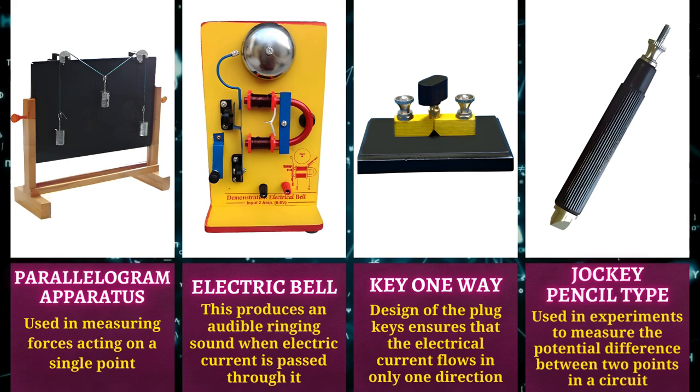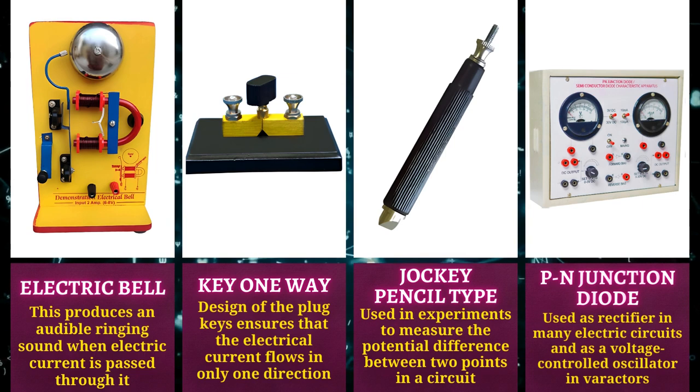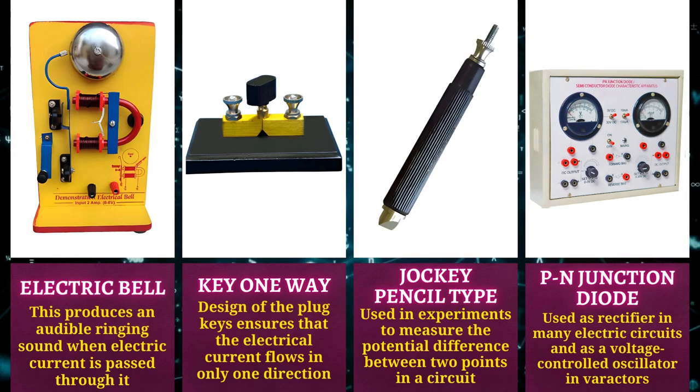Jockey pencil type is used in experiments to measure the potential difference between two points in a circuit. PN junction diode is used as rectifier in many electric circuits and as a voltage controlled oscillator in varactors.